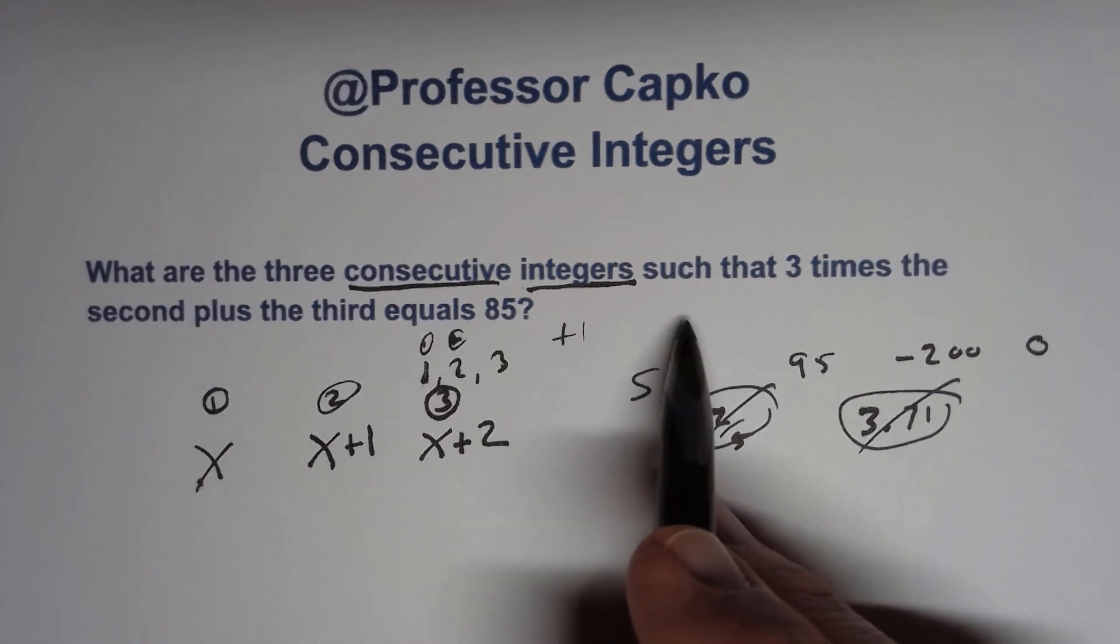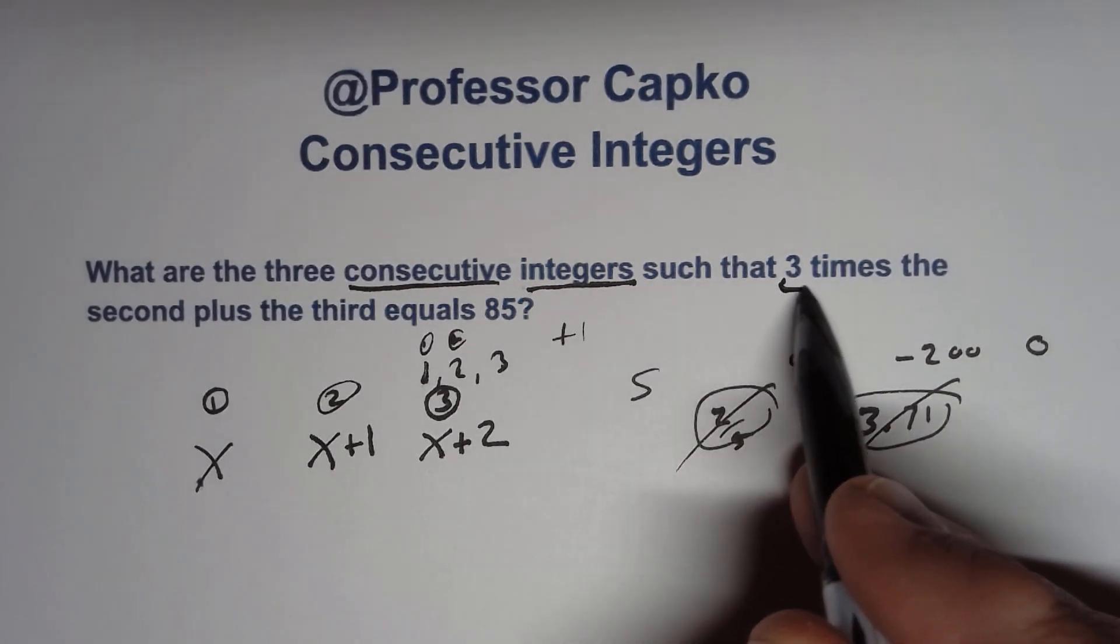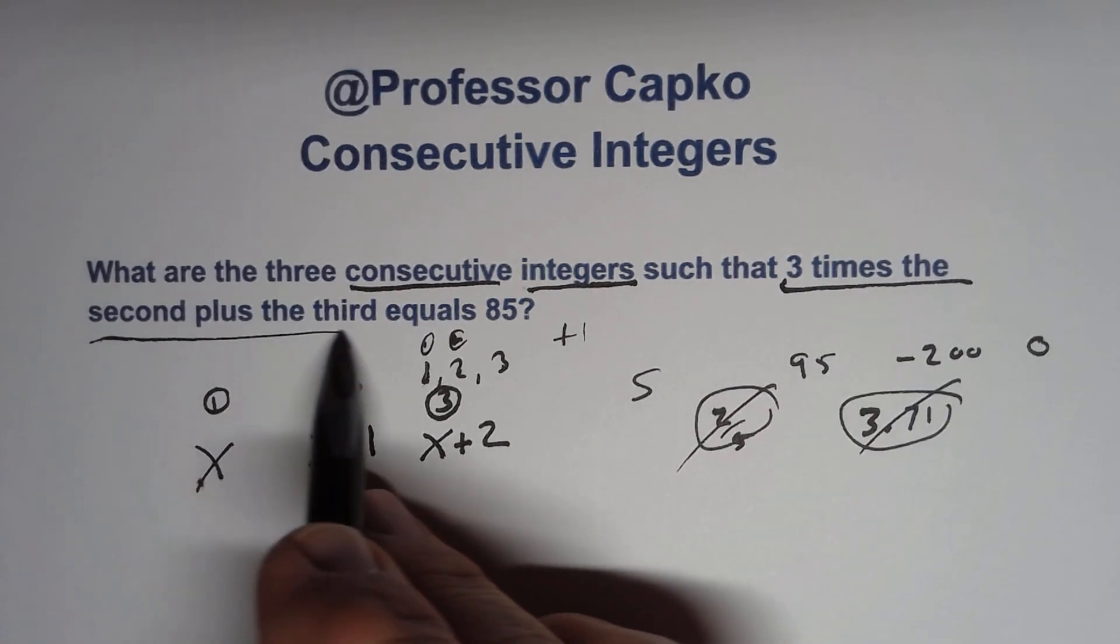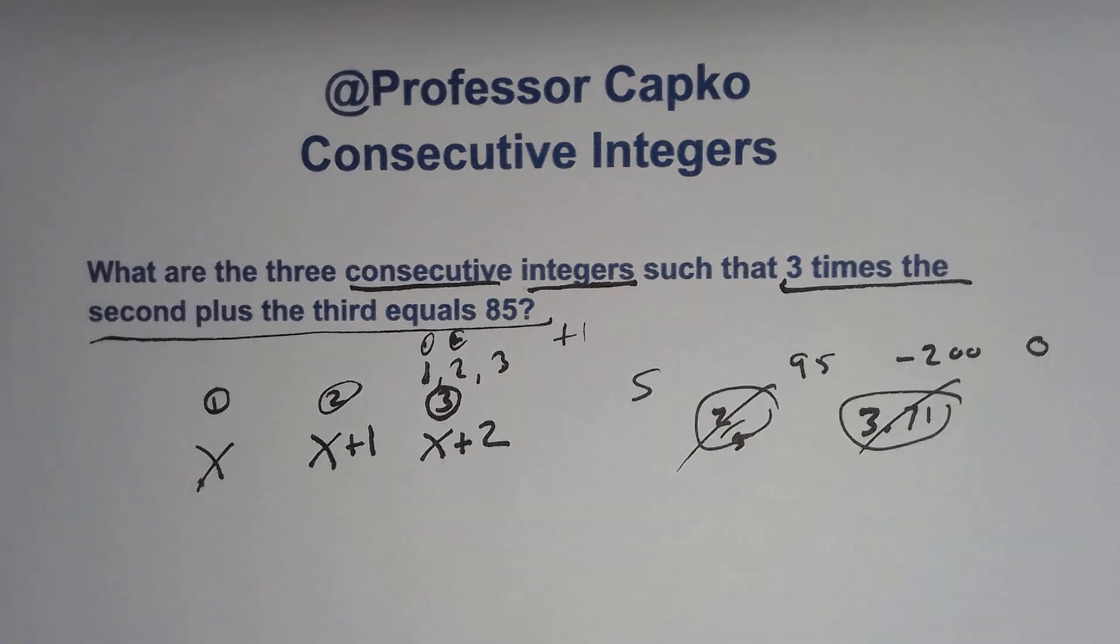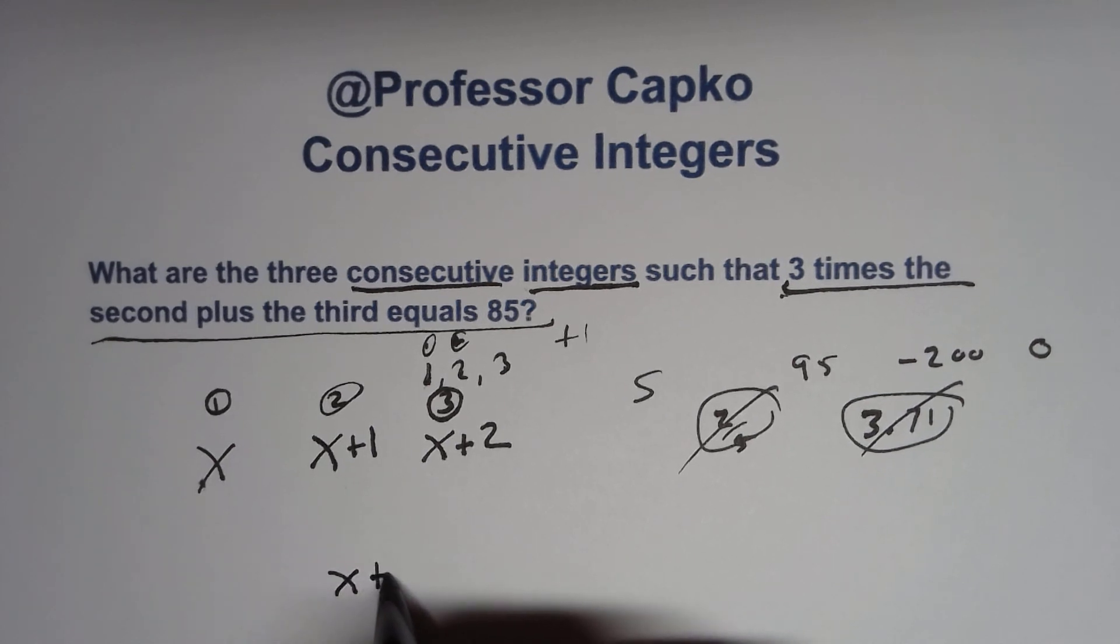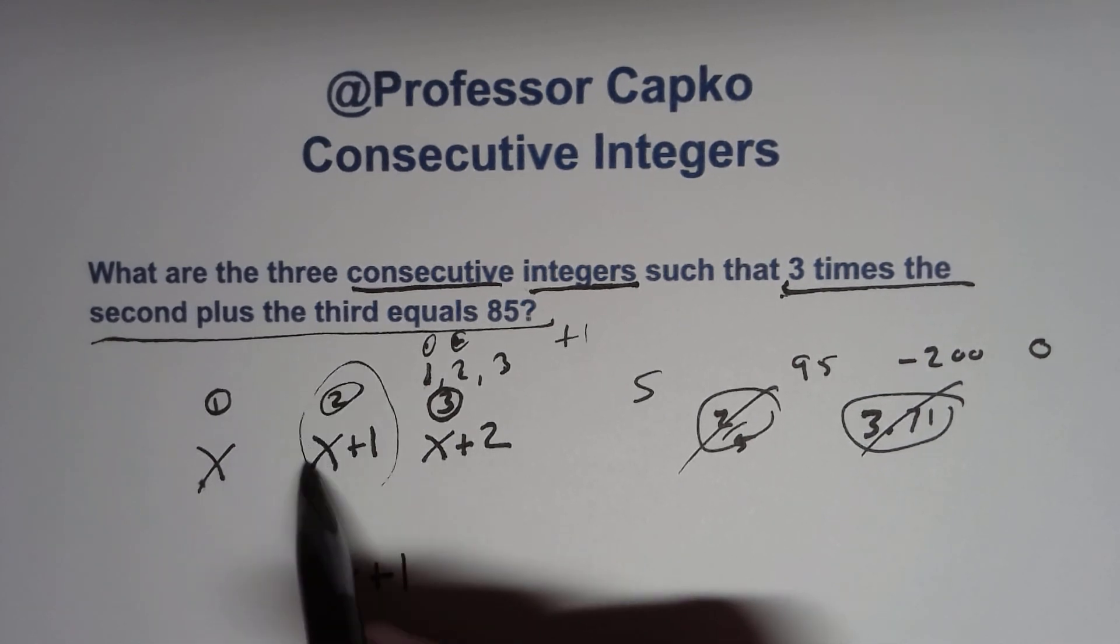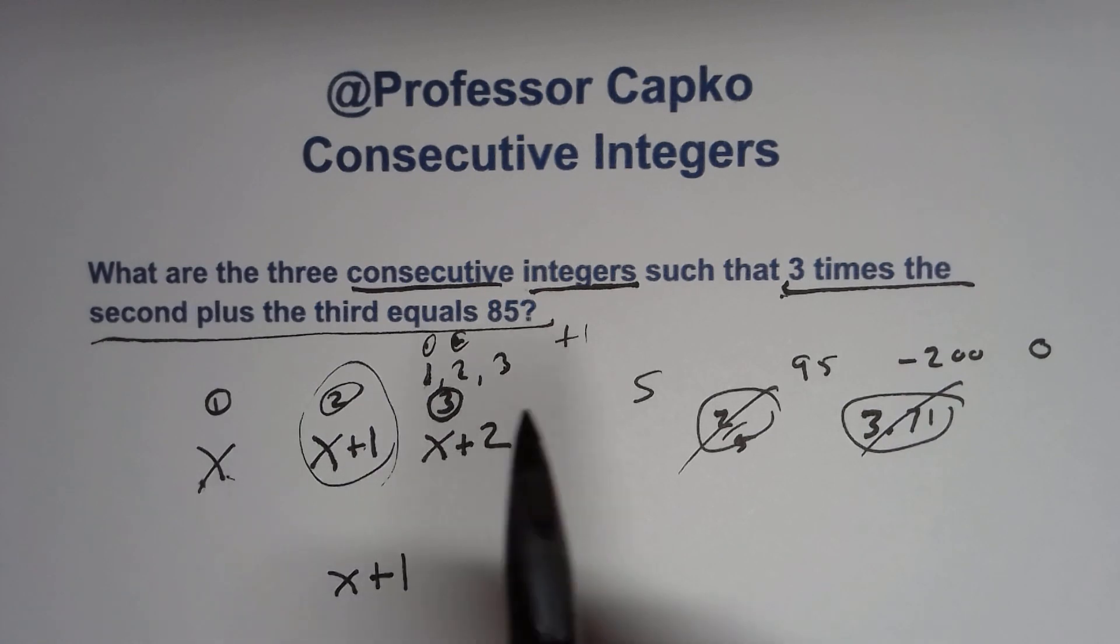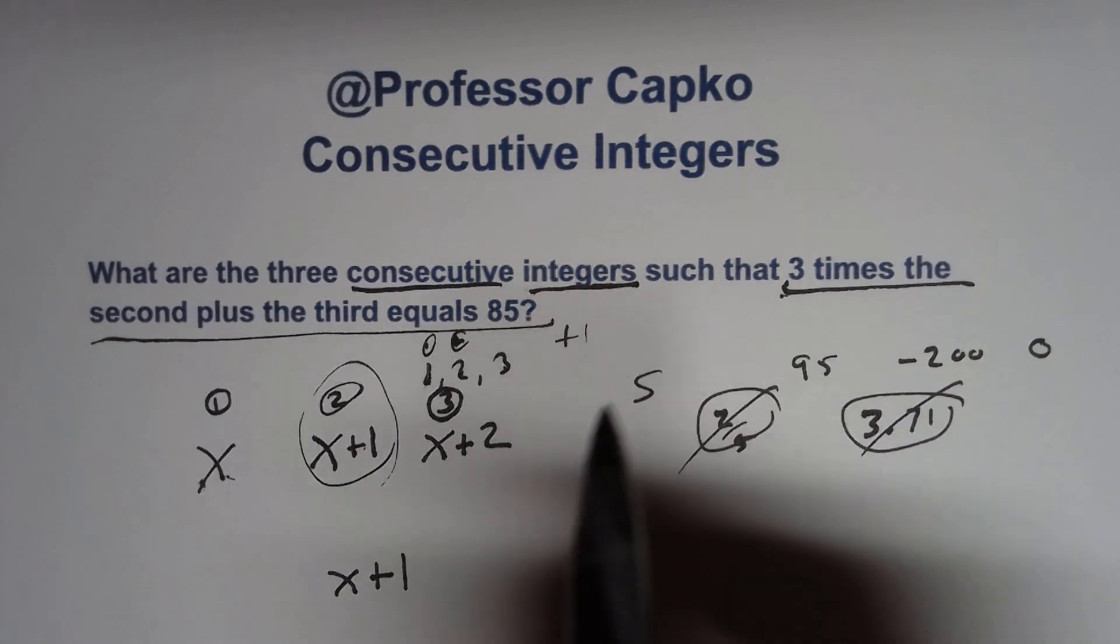So let's write our equation, which is this part here, three times the second plus the third equals 85. So three times the second, what's our second integer? It's X plus one, right? That's our second integer. This is the first one, second, third, X plus one, and we're going to multiply it.